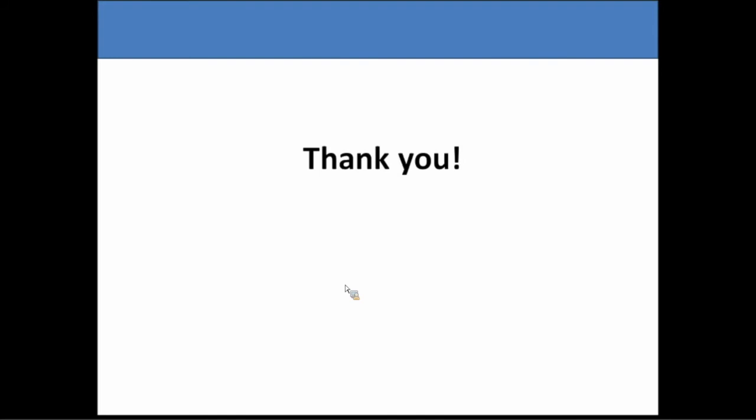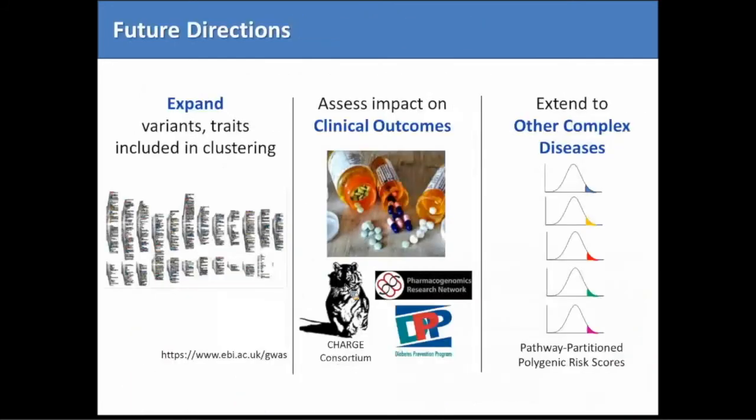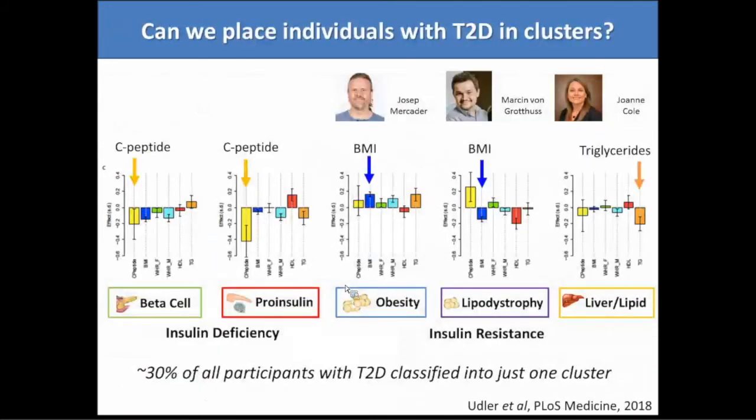A lot of my PCOS patients might come up as high probability for MODY on the calculator because I see them all the time — lean, in their early 20s — and maybe I should start thinking about MODY in that population. There's a slide that shows the five cluster groups.